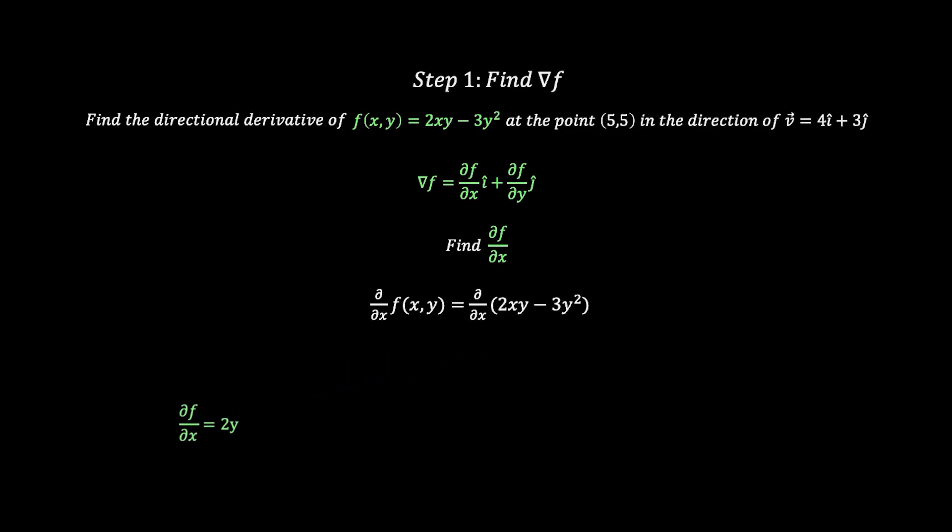Let's put this to the side and repeat this step with respect to y. After carrying out the operation, we'll find that our result is 2x - 6y. So from this we can conclude that our gradient is 2yi + (2x - 6y)j.